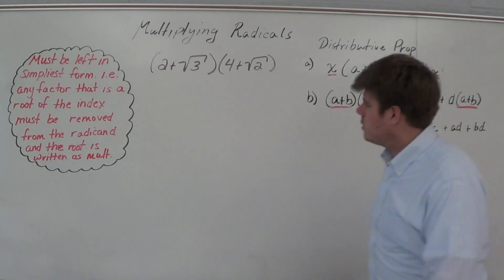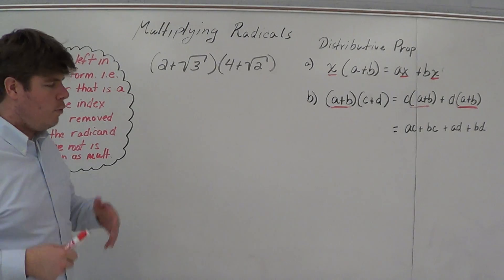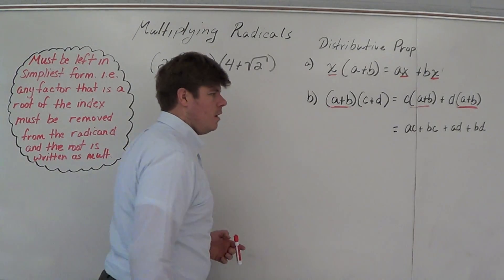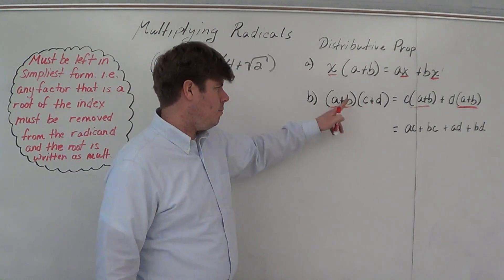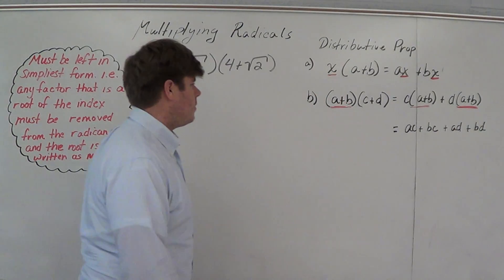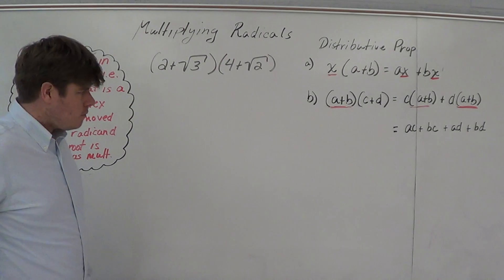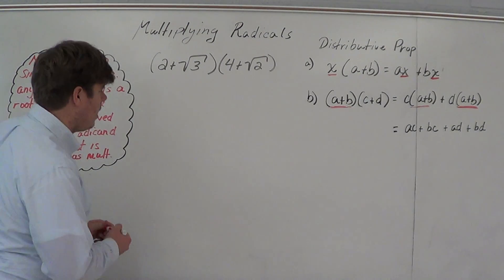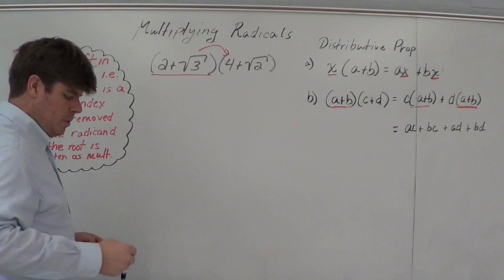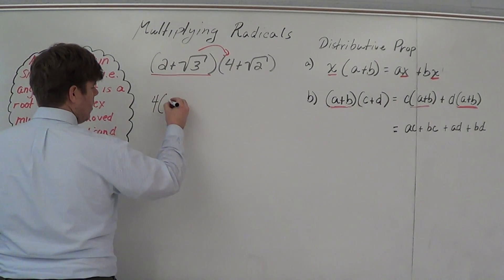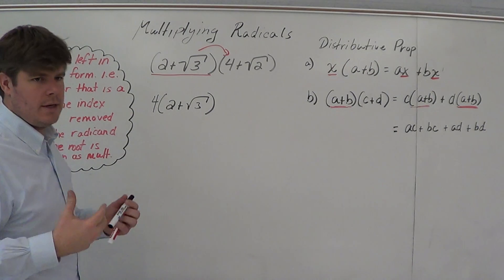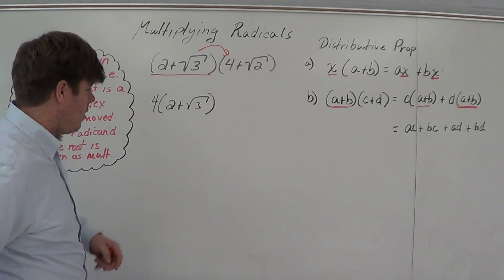So what I want to talk about here is multiplying radicals. With the FOIL method, you can use it, not a problem. You just have to know that the distributive property is what's applying. A is multiplying both C and D, and B is multiplying both C and D as well. So we're just going to utilize that property here. I'm going to take this entire quantity and distribute it to the four, and write it that way.